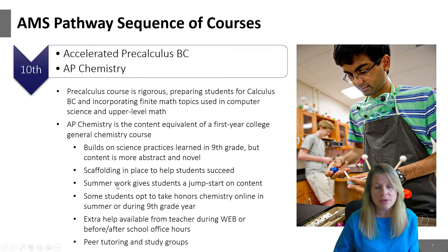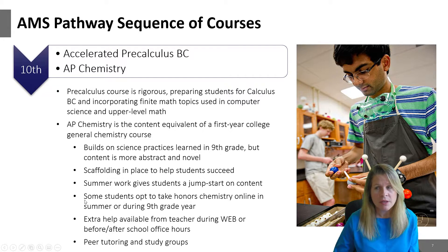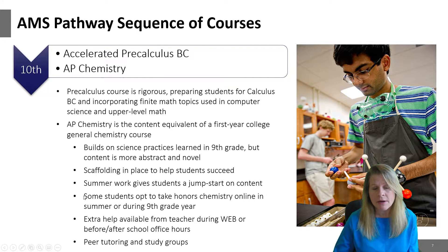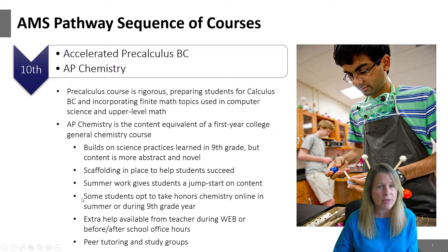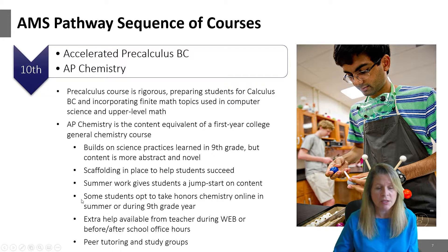We do put some scaffolding in place to make sure you're successful. For one, we're going to give you a summer work packet to help give you a jump start on the content. We also offer an online honors chemistry class that you can take through Cobb Virtual Academy — some students choose to do that during their ninth grade year, and some choose to do it in the summer leading up to tenth grade. It's not required, but it is advisable so that you have some chemistry background before jumping into a college-level course.